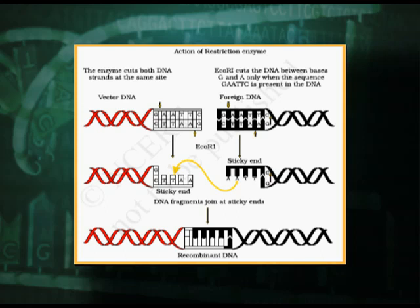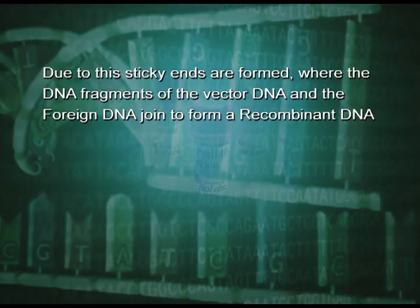In this diagram, we can observe the formation of recombinant DNA by the action of restriction endonuclease enzyme EcoRI. The restriction enzyme cuts both strands of the vector DNA at the same time. EcoRI cuts the DNA between bases guanine and adenine, only when the sequence GAATTC is present in the DNA. Due to this, sticky ends are formed, where the DNA fragments of the vector DNA and the foreign DNA join to form a recombinant DNA.